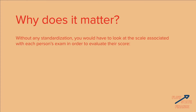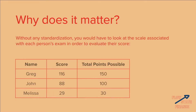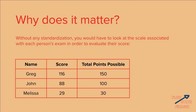Without any standardization, you would have to look at the scale associated with each person's exam in order to truly evaluate their score. So now let's look at the same scores in the context of the total points possible. Greg's 116 was out of 150 possible points, John's 88 was out of 100 possible points, and Melissa's 29 was out of 30 possible points.